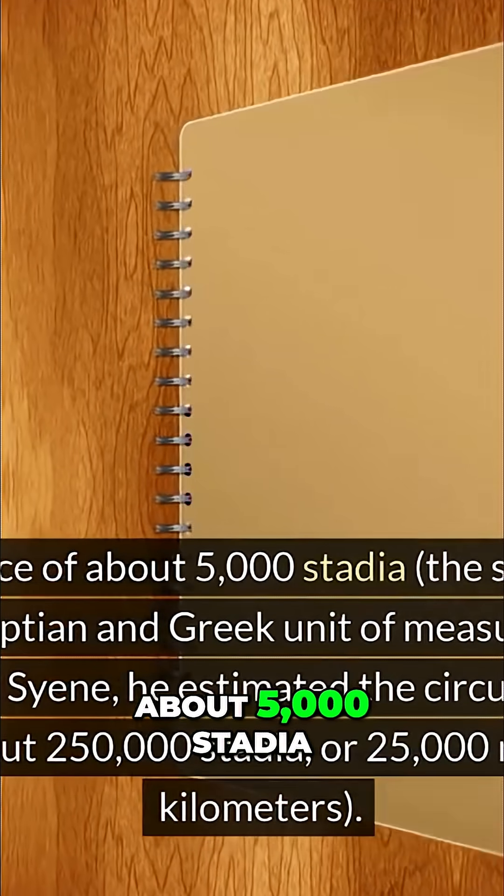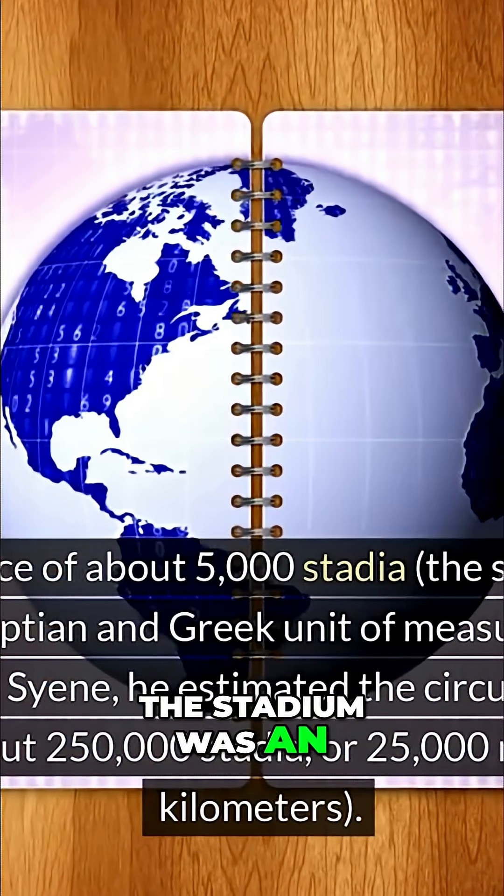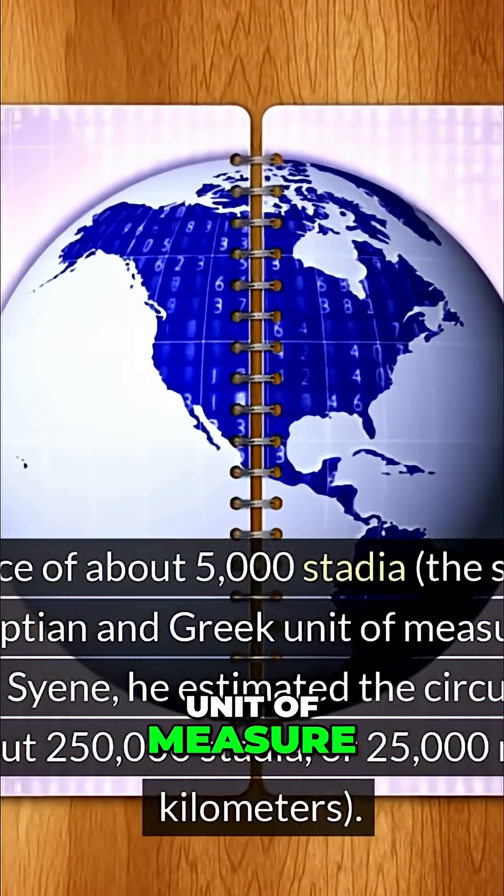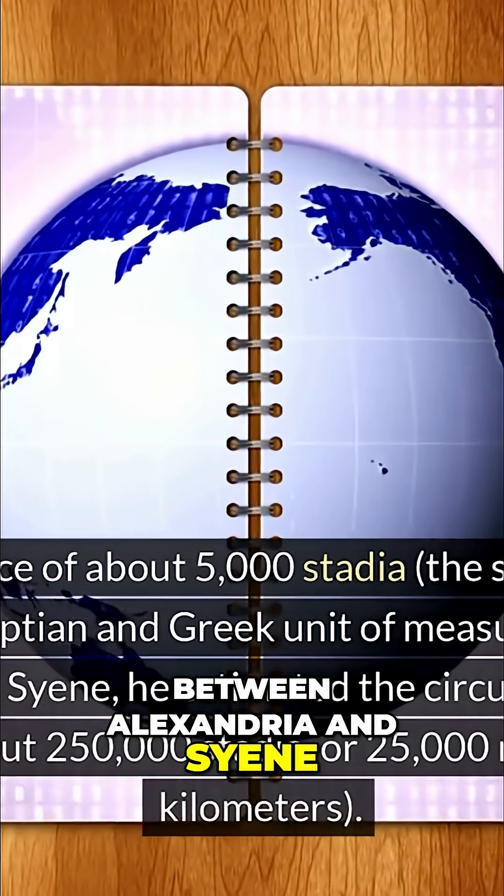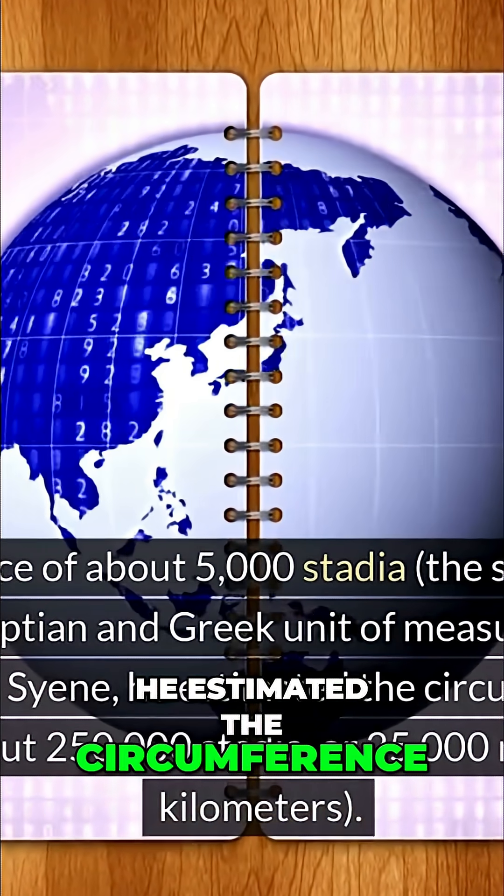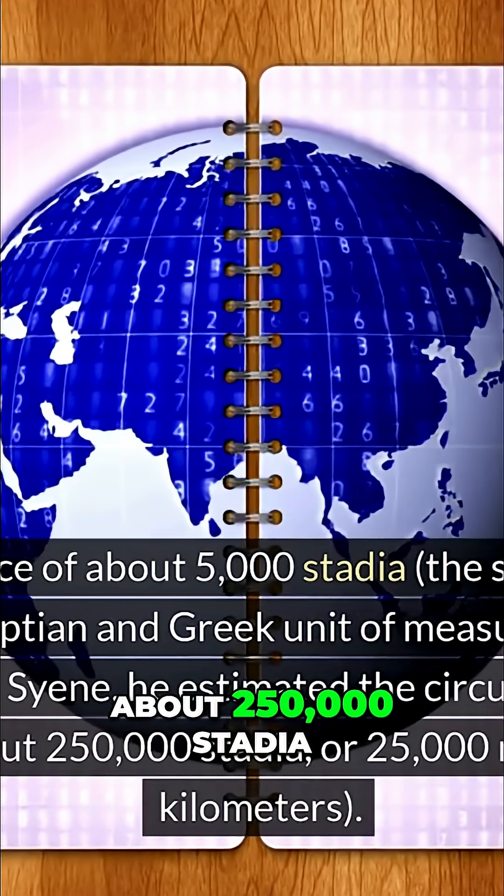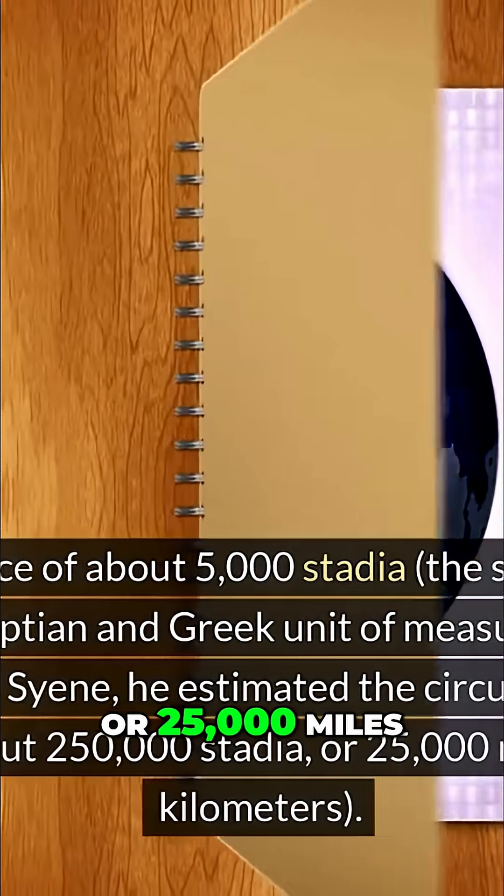With a distance of about 5,000 stadia—the stadium was an ancient Egyptian and Greek unit of measure—between Alexandria and Syene, he estimated the circumference of the Earth at about 250,000 stadia, or 25,000 miles (40,000 kilometers).